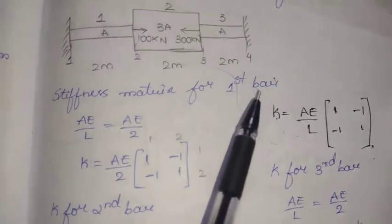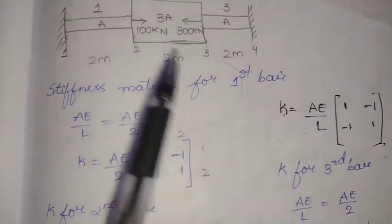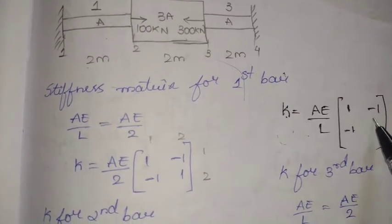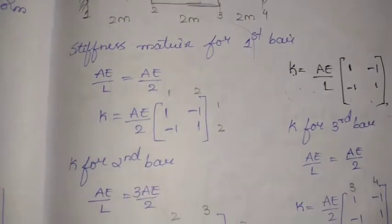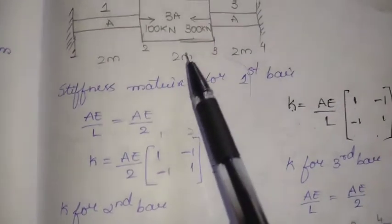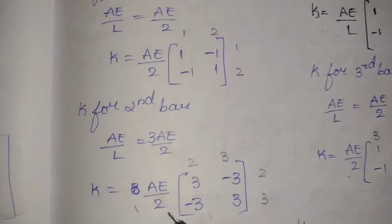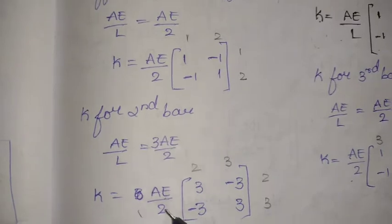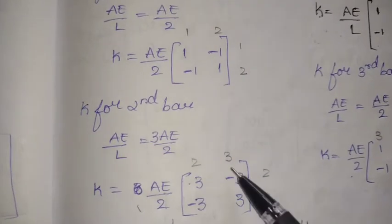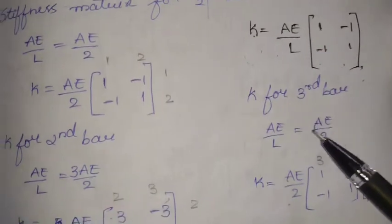For the first bar, AE/L is constant with area A and length L equals 2 meters, giving the stiffness matrix as (AE/2) times [1, -1; -1, 1]. For the second bar, area is 3A, so AE/L equals 3A·E/2, giving (AE/2) times [3, -3; -3, 3]. For the third bar, area is A and length is 2 meters, giving the same form as bar one.